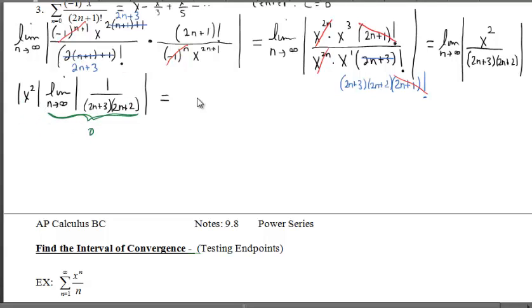And so what we end up with is absolute value of x squared times 0, which gives us 0. Which is wonderful because remember, we're in the ratio test. And if we're in the ratio test, if we get a number that's less than 1, we know that the series converges.